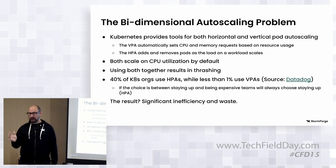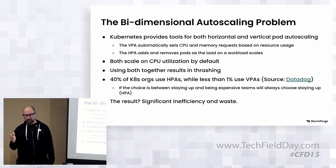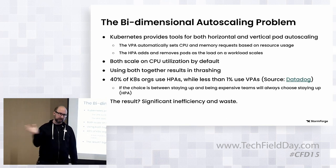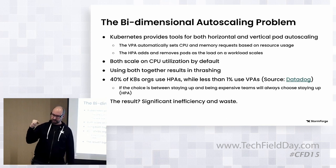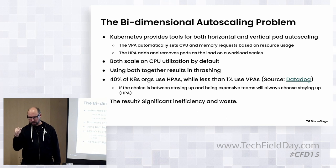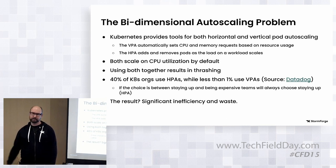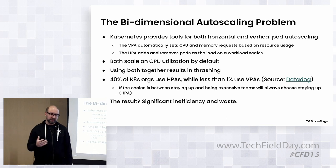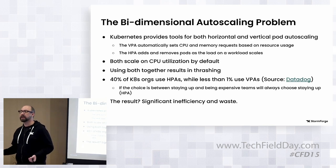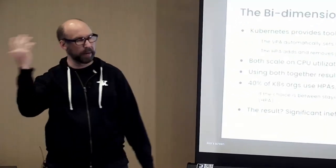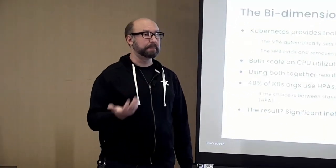HPA has been used forever and is very popular — it adds and removes pods horizontally based on inbound load. A lot of times though, people do a template approach because you have to configure it upfront. Based on CPU utilization is the de facto standard, and the default is 60%. Is 60% right? I don't have the answer — it depends on your app. Some apps are more CPU bound, some more IO bound.